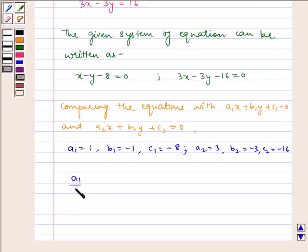Now, a1 by a2 equals 1 by 3, b1 by b2 equals minus 1 by minus 3 which equals 1 by 3, and c1 by c2 equals minus 8 by minus 16 which equals 1 by 2.